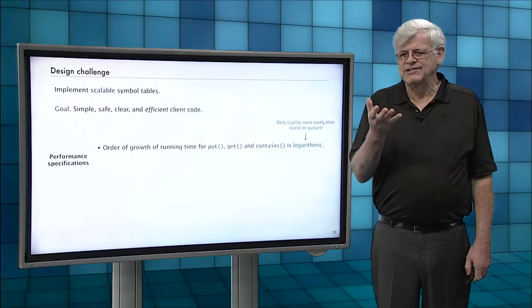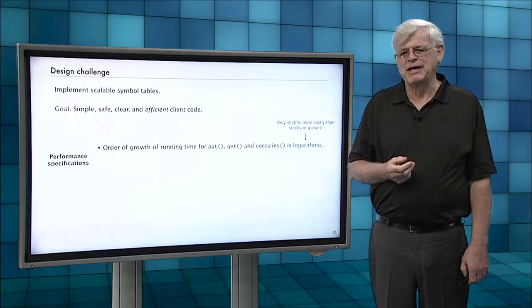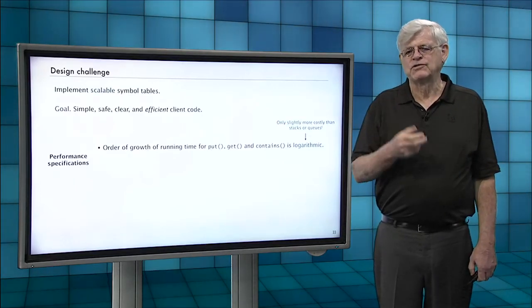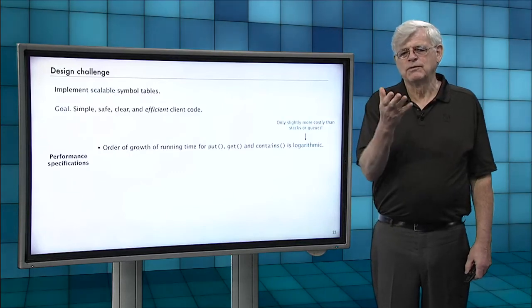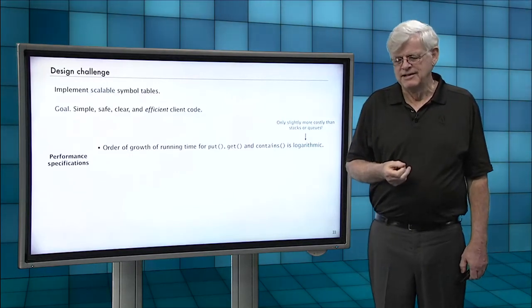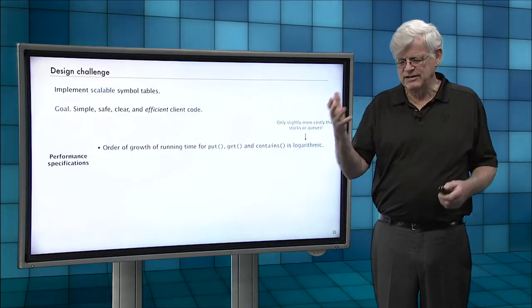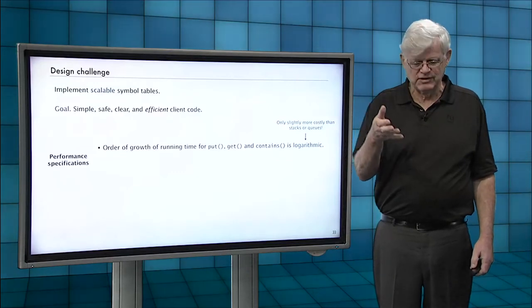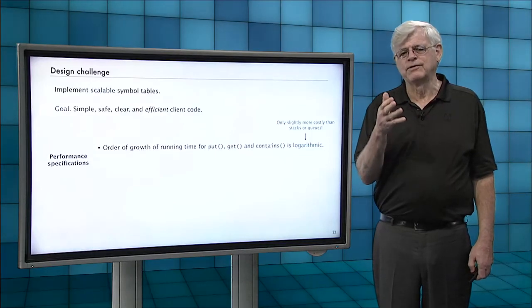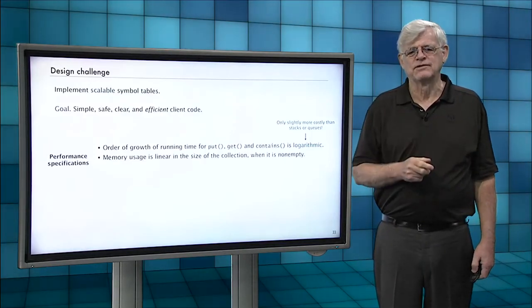Now we're going to relax it slightly. It's really a lot to expect to get constant time running time for these kinds of operations. But we'll relax it to say it's got to be at least logarithmic. Since the log of a million is 20, the log of a billion is 30, it's only a little bit more costly than constant time. And that's what we're going to say. If you don't have that kind of performance, then you don't have a symbol table.